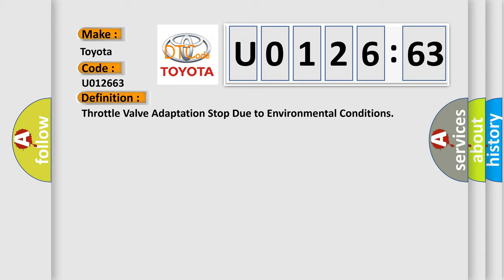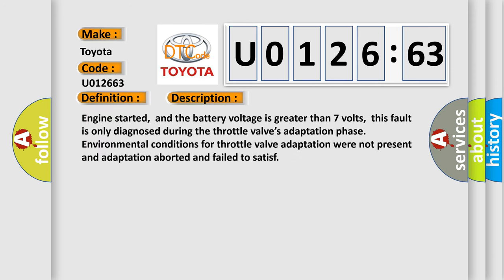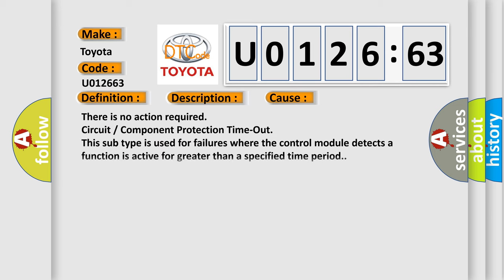Here is a short description of this DTC code. Engine started and the battery voltage is greater than seven volts. This fault is only diagnosed during the throttle valve's adaptation phase. Environmental conditions for throttle valve adaptation were not present, and adaptation aborted and failed to satisfy. This diagnostic error occurs most often in these cases: there is no action required — circuit or component protection timeout. This subtype is used for failures where the control module detects a function is active for greater than a specified time period.